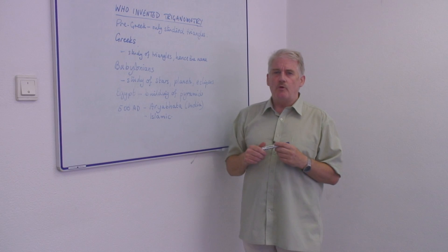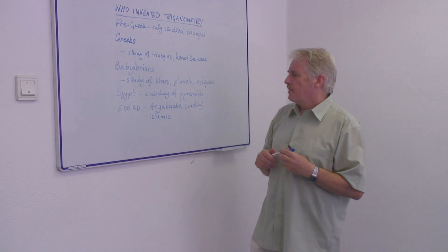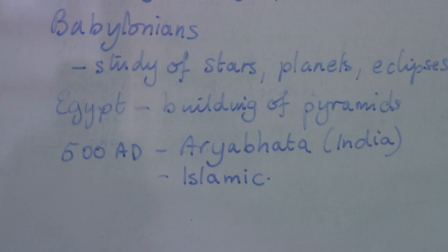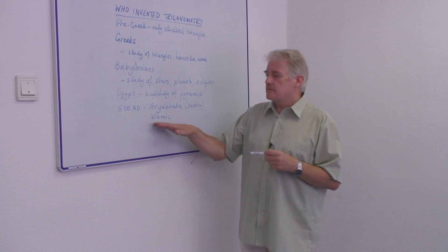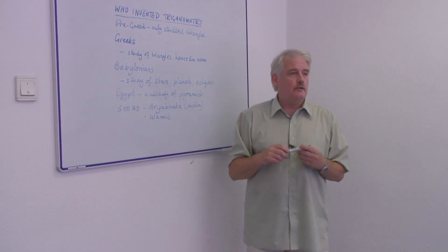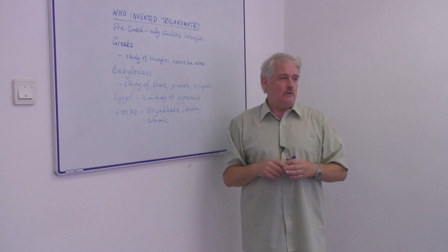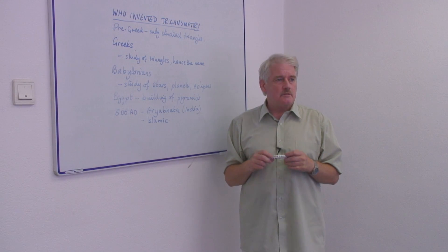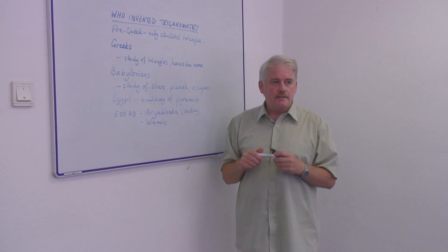But in terms of formality and formalizing, it wasn't until 500 AD that Aryabhata in India and the Islamic world got hold of trigonometry and really turned it into a proper science. And from there it came into Europe.